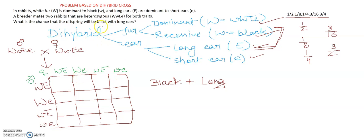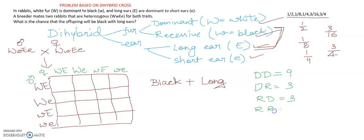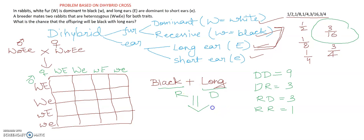As you can see, the question asks how many offspring will be black with long ears. Here is a shortcut trick: if both traits are dominant (DD), we get 9. Dominant and recessive (DR) gives 3, recessive and dominant (RD) gives 3, and recessive and recessive (RR) gives 1. Here one character is recessive (black) and the other is dominant (long ears) — that is the RD category with ratio 3. So out of 16, the answer is 3 by 16.